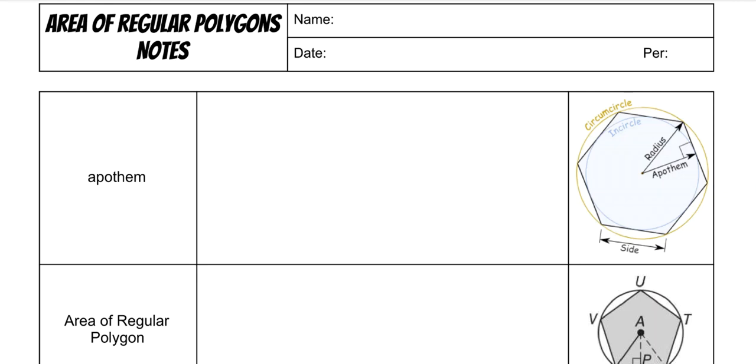Today we're going to go over areas of regular polygons. You need to remember what a regular polygon is. It's any sided object, from a triangle up to a nonagon and above, that has all equal sides and all equal angles.